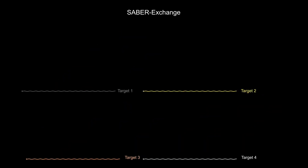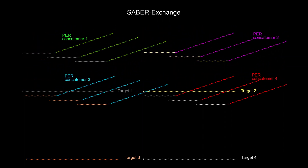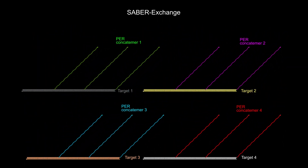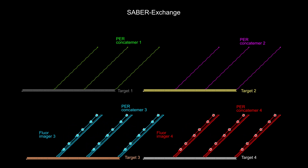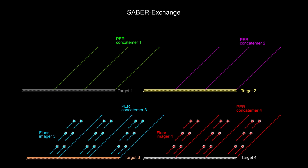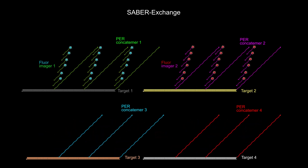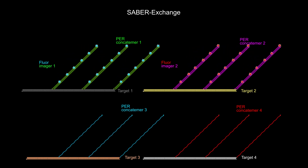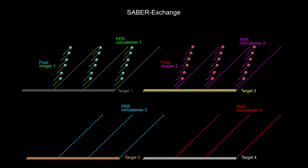The number of DNA and RNA targets can be significantly increased by performing a technique known as DNA exchange, in which one set of fluorescent imagers bound to PER-concatemers at a series of DNA and RNA target sites is captured under the microscope, washed out of the sample, and replaced by another set of fluorescent imagers that binds to PER-concatemers at different DNA and RNA target sites. This exchange reaction can be repeated multiple times.